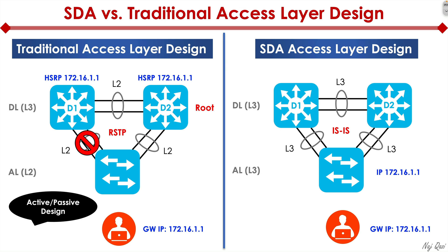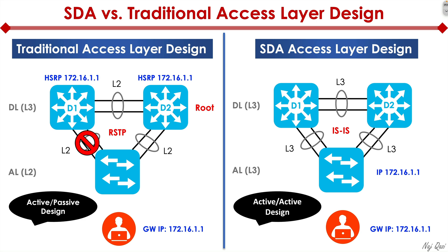Because we're running Layer 3 everywhere, the gateway now becomes the access layer switch, so it's low latency — traffic doesn't have to travel all the way up to the distribution layer switches. As we move a laptop from one switch to another switch in the network, LISP automatically allows mobility to occur. This user can connect their device to another switch and remain connected to the entire fabric without a network administrator having to configure that port.